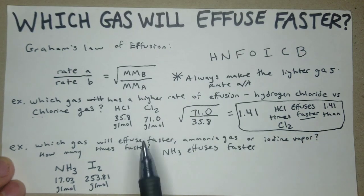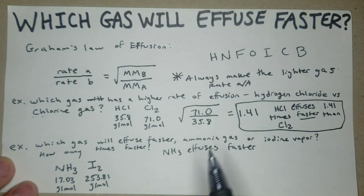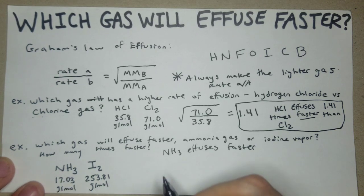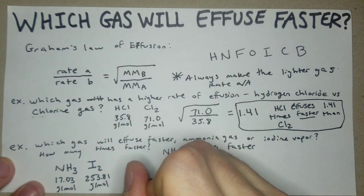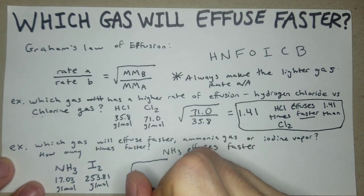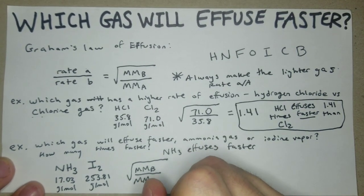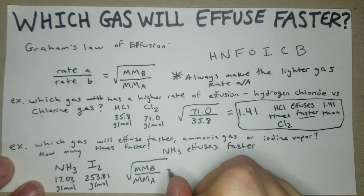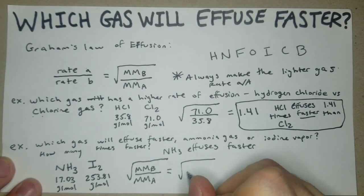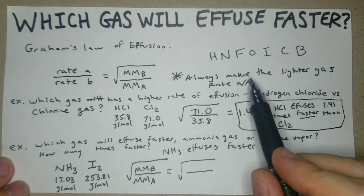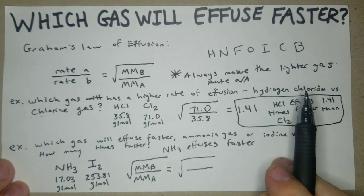But now we need to use Graham's law of effusion to figure out how much faster. Based on these numbers it looks like this is going to be probably more than 1.41, but let's check it out. We're looking at the square root of molar mass of b over molar mass of a. We know always make the lighter gas rate a.